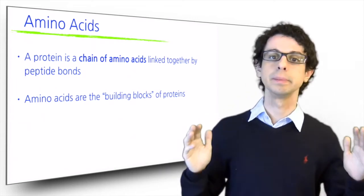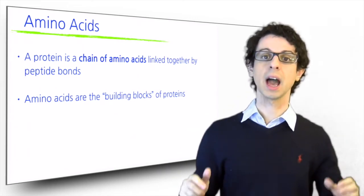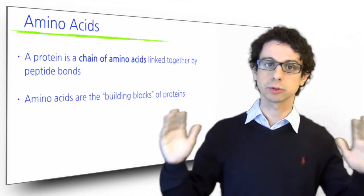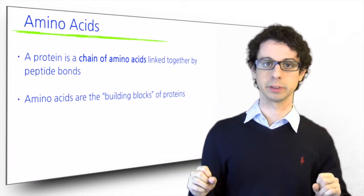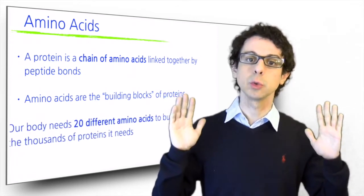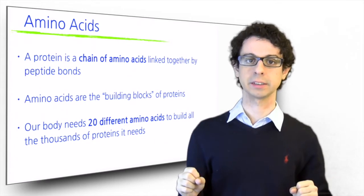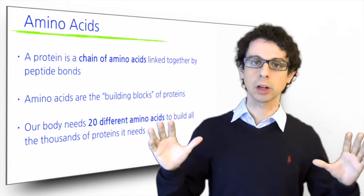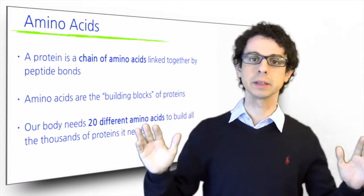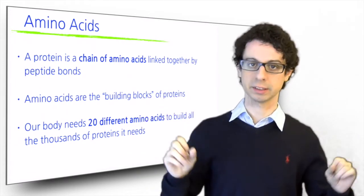So amino acids are the building blocks of proteins and our body needs to build thousands of different proteins for all its structural and regulatory purposes. But all these thousands of different proteins are made with only 20 different amino acids. The basic building blocks that we need to build all the thousands of proteins that we may need to build are always the same 20 amino acids.